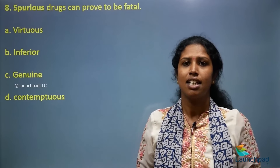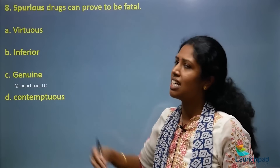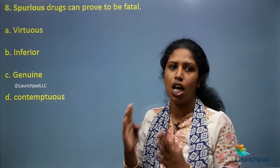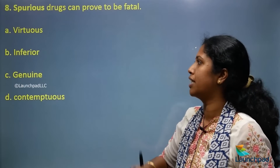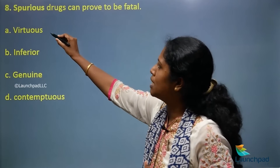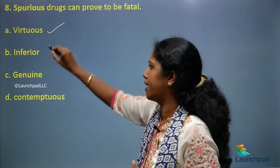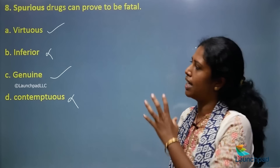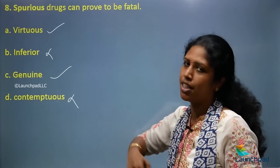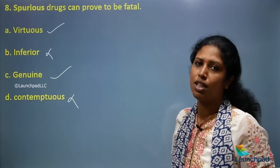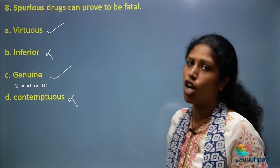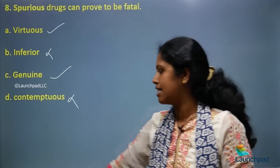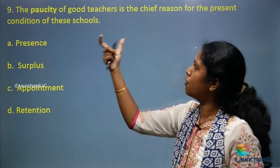Next question: 'Spurious drugs can prove to be fatal.' Fatal means it could cause death. Spurious drugs are harmful and not genuine. Now looking for the antonym: virtuous, genuine, inferior, contemptuous. 'Inferior' is not connected. 'Contemptuous' is not right. The correct answer is 'genuine' — the opposite of spurious is genuine. Genuine drugs could not prove to be fatal when you look at the opposite of the entire sentence.